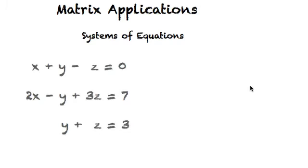So let's first start with looking at a system of equations here. We have x plus y minus z equals zero, 2x minus y plus 3z equals seven, and y plus z equals three. Now if I wanted to solve this equation, it's not so hard. I'm sure you have experience with this.